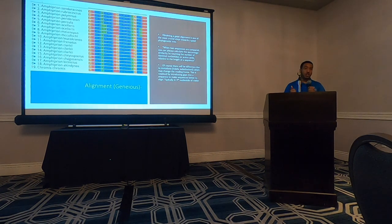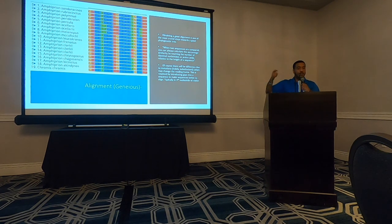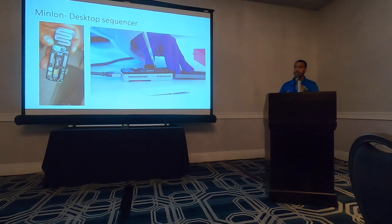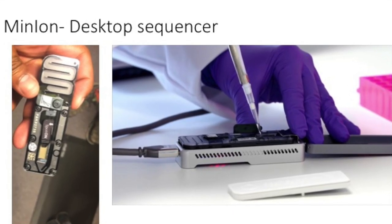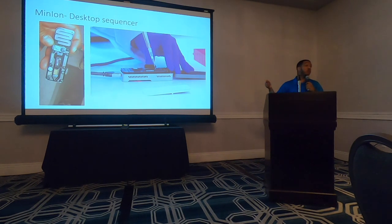Another tool we used was called Geneious, which we can use to align different genome sequences and compare their differences and similarities. Essentially, the more similarities two species have in their genomes, the closer they are on the tree — the more differences, the further they are. A new tool I was able to use is called the MinION. Typically genome sequences are sent to places like Illumina where it can take weeks or months. With the MinION, you load your DNA sample and within 24 to 48 hours you can have a complete genome sequence. They're kind of expensive right now, but in a couple of years we might be able to do this in our classrooms.